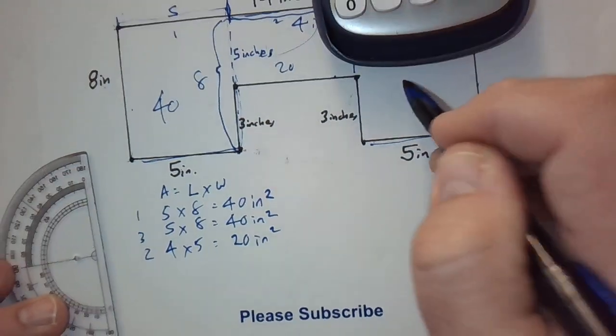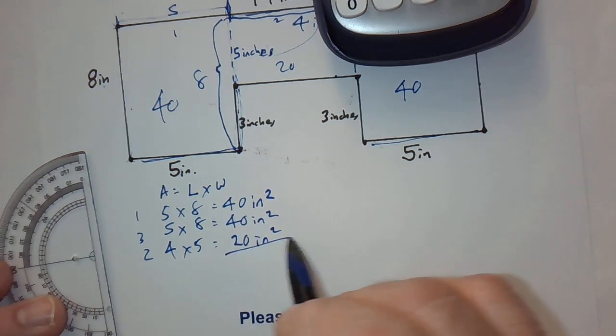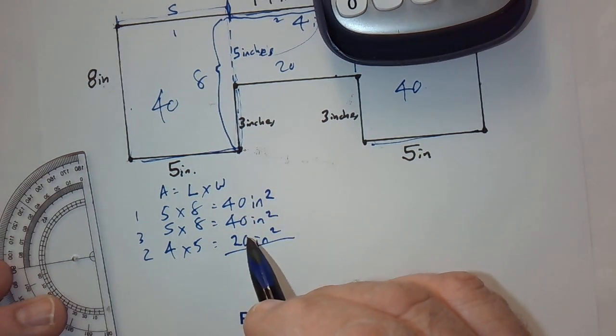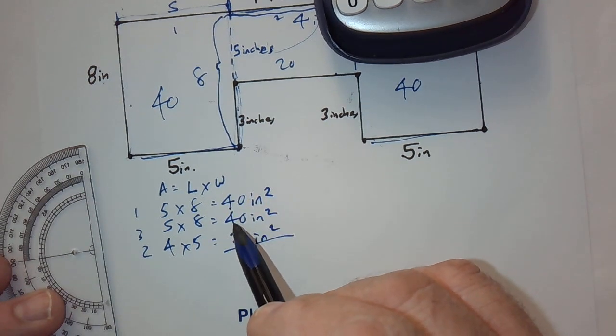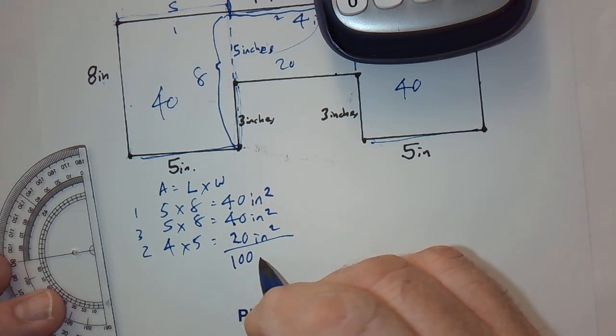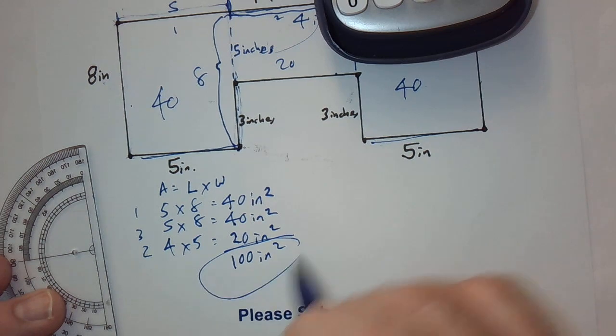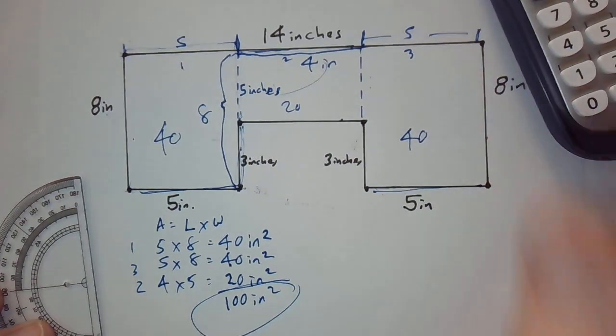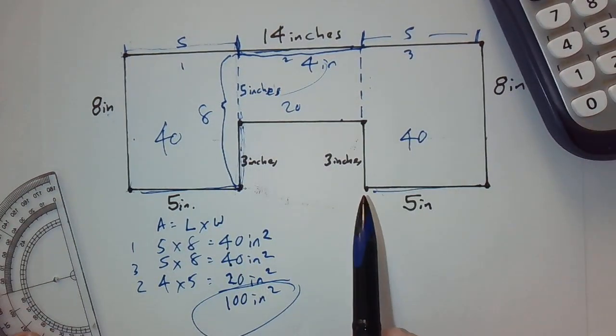This one is 20, and we found this one to be 40 as well. So, all we need to do is add them up. So, we have 40, and 40 is 80, 90, 100. We have 100 inches squared is the area of this oddly shaped item.